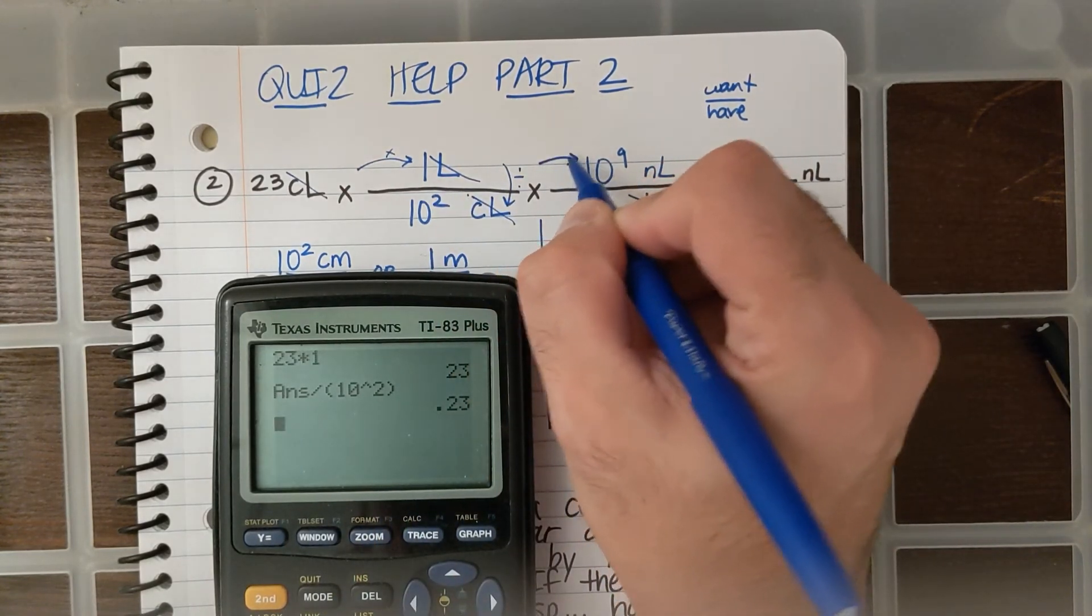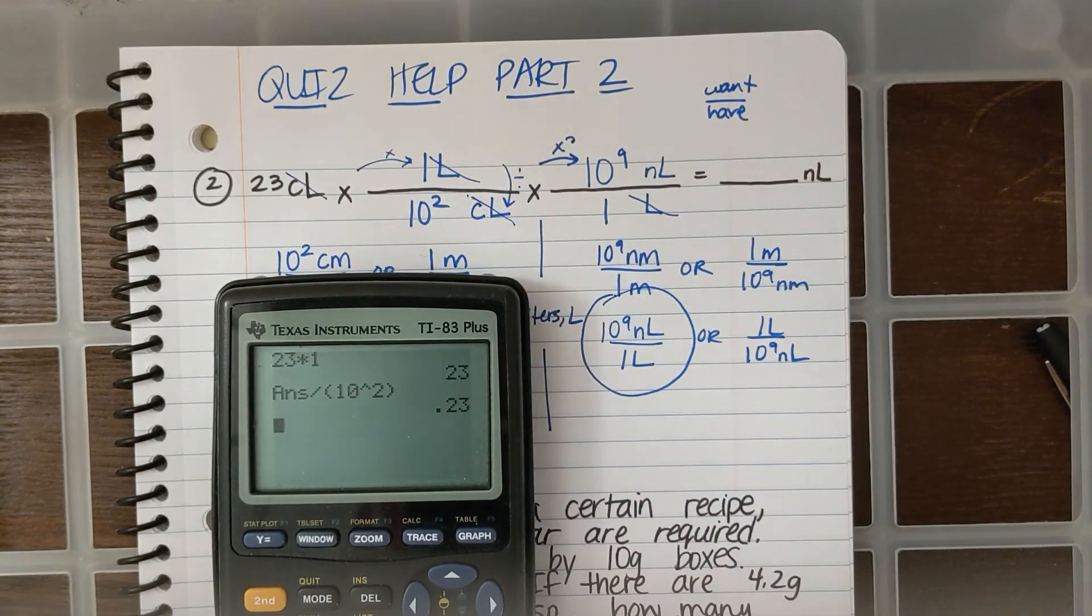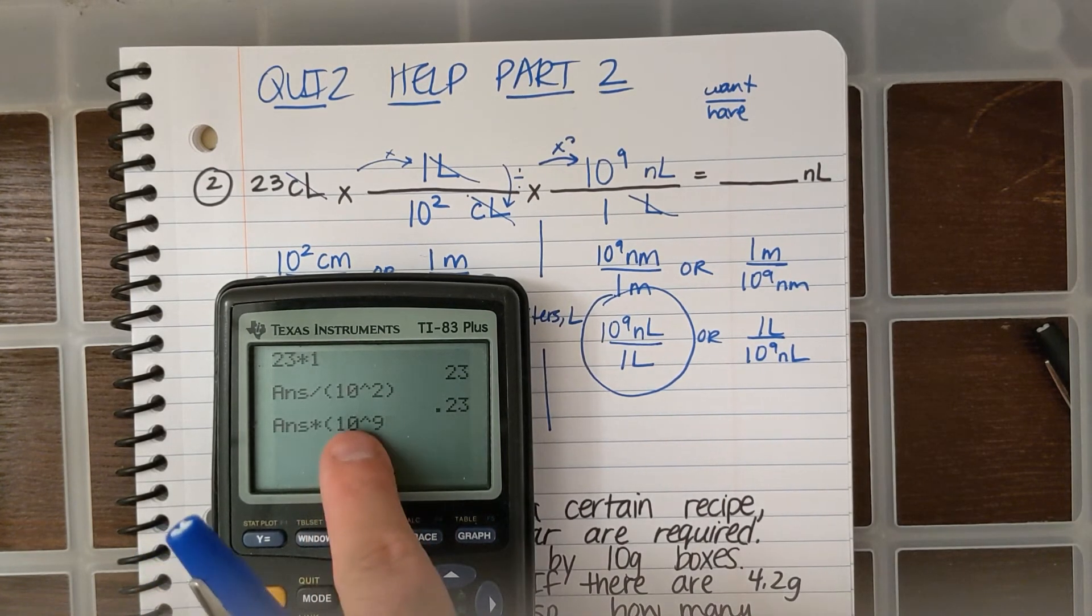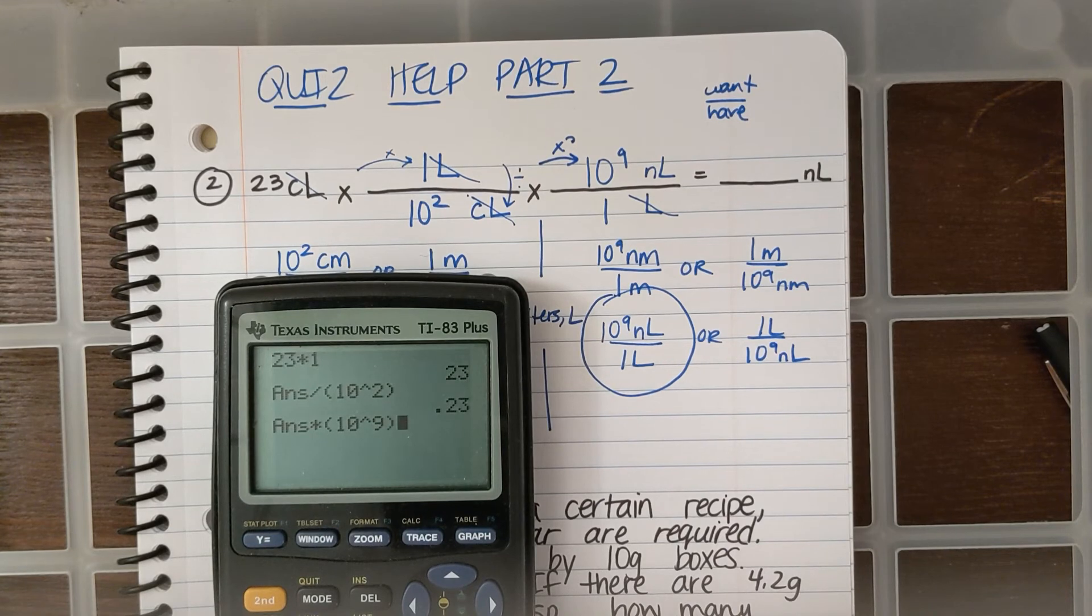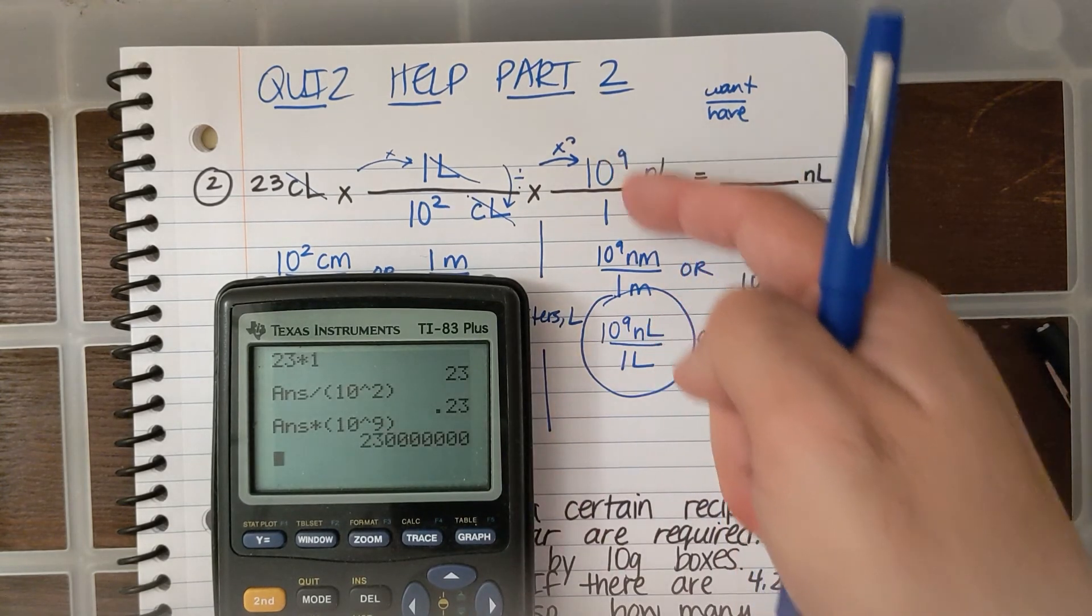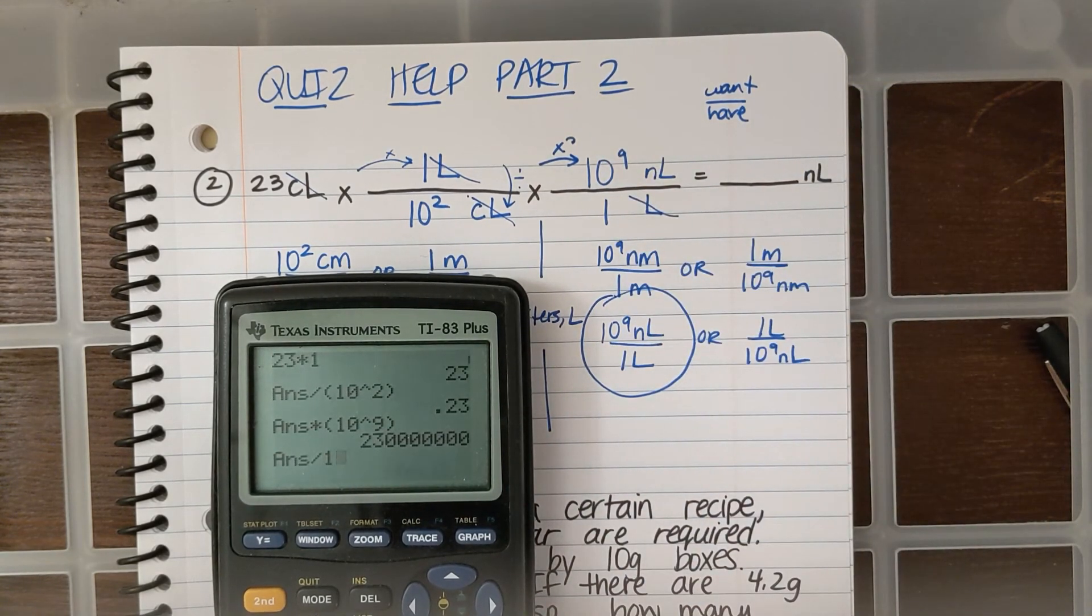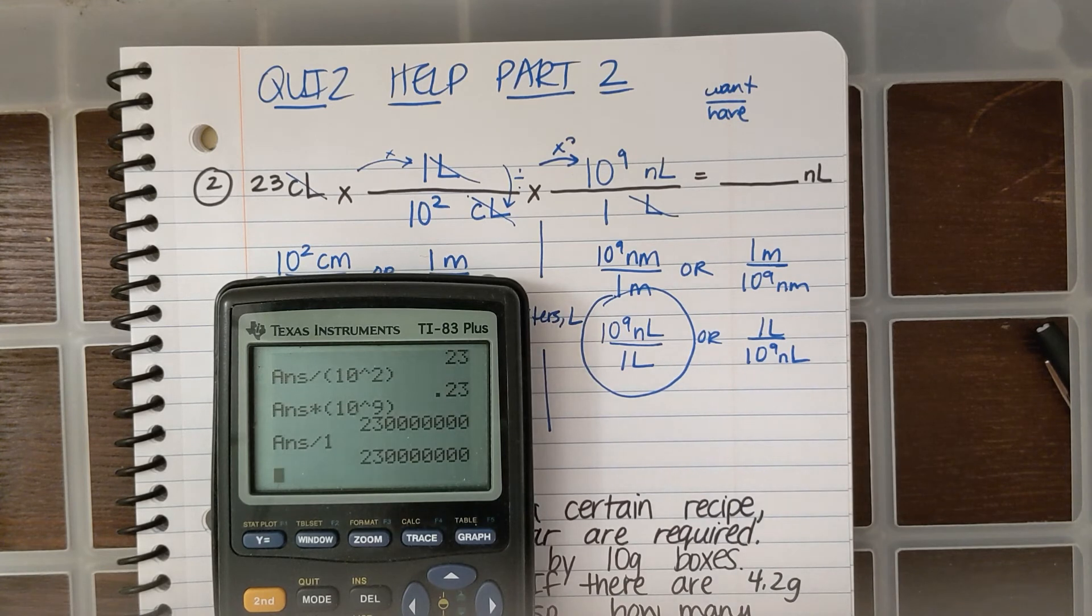Then, I'm going to multiply by 10 to the ninth. So, I'm going to do times 10 raised to the ninth. And notice how I put everything in parentheses so I don't make a mistake again. And then, I'm going to divide by 1.